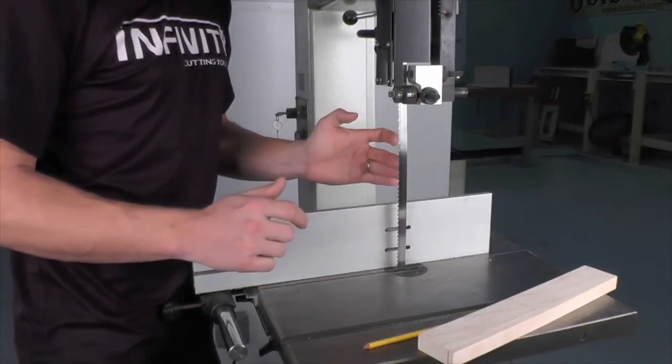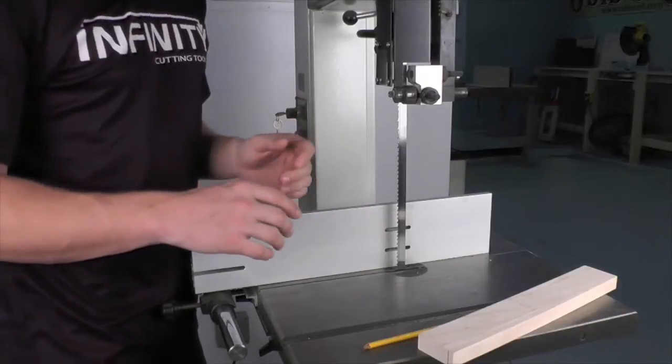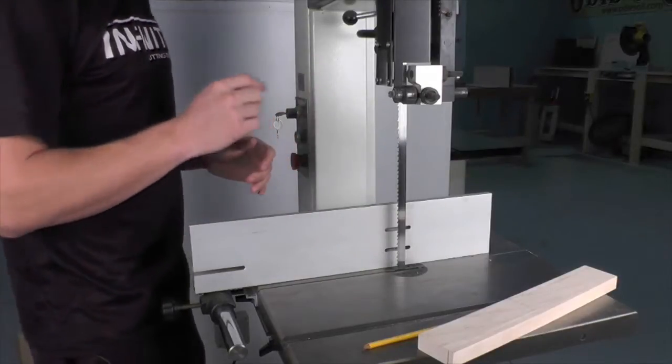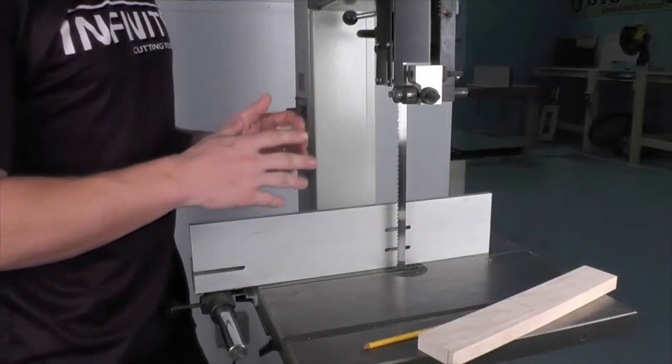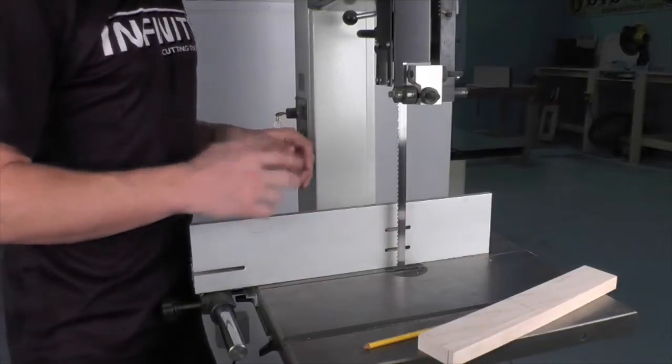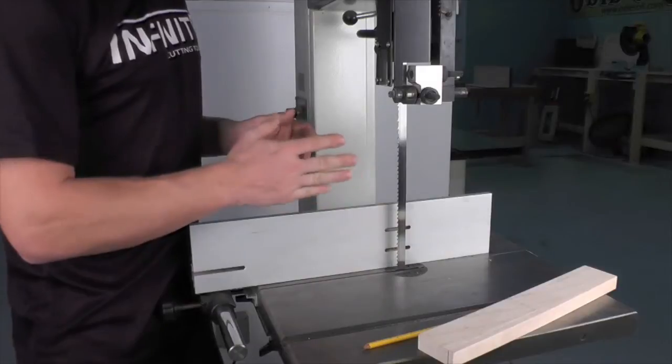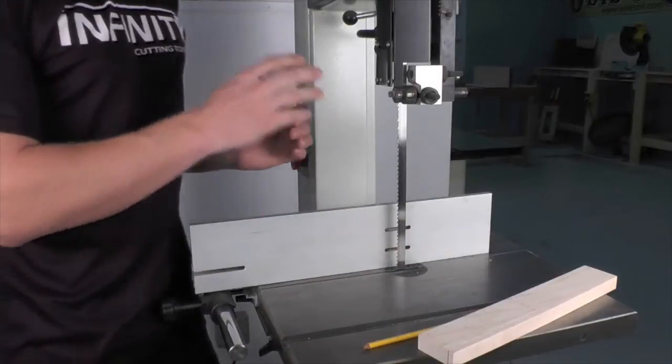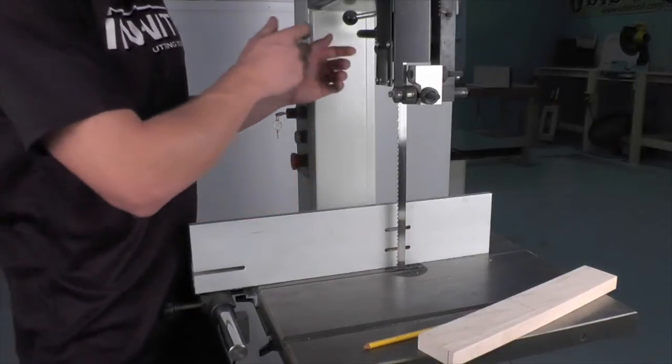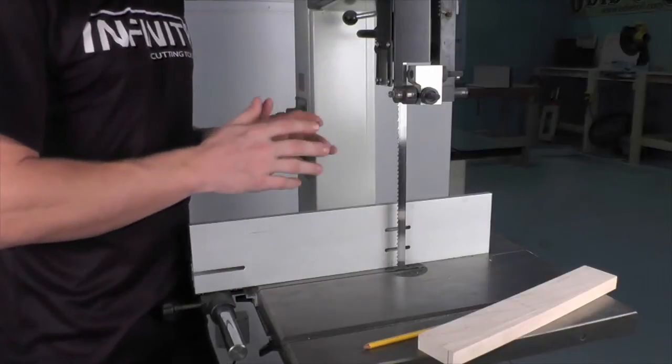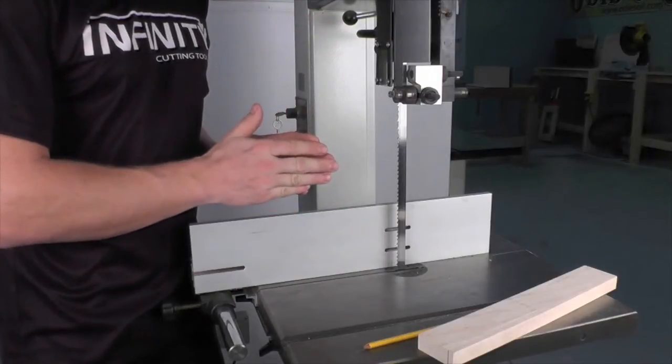Once I have this amount of give, I know the blade is going to be just about right and run fairly true. I can double check this setting by turning on the saw and watching it run. I want to see that the blade doesn't flutter in any way. If the blade is fluttering, I'm going to make minor adjustments to that tension until the blade runs nice and smoothly.